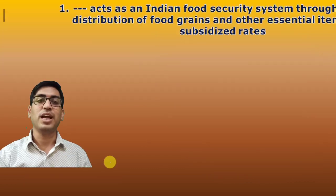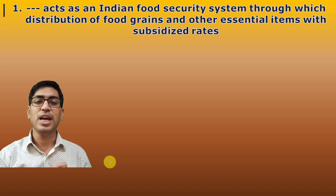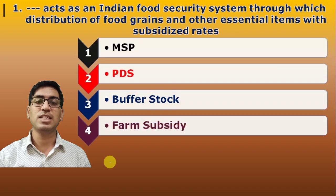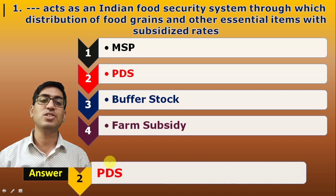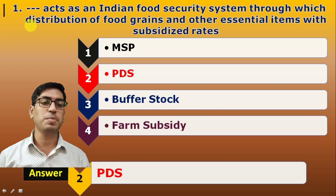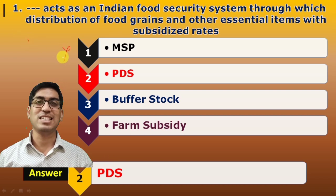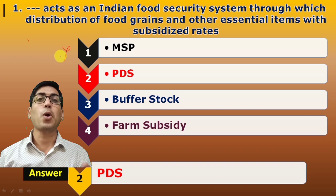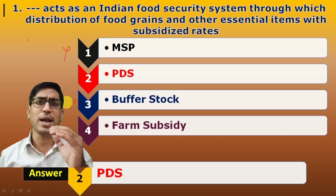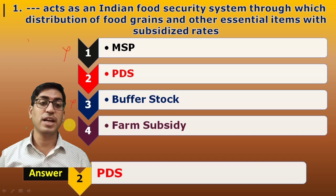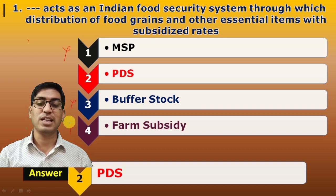First question: DASH acts as an Indian food security system through which distribution of food grains and other essential items happens at a lower or subsidized rate. The options are MSP (Minimum Support Price), PDS (Public Distribution System), Buffer Stock, or Farm Subsidy. The answer is clearly PDS. MSP is a pricing system for procurement of grain from farmers. Buffer stock fights calamities and price fluctuations. Farm subsidy is a type of protection. So the answer is PDS.